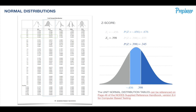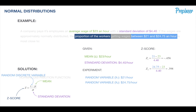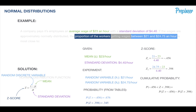We have our two values: 0.676 from the first z-score and 0.345 for the tail. Our banded cumulative probability between z-scores of negative 0.456 and 0.398 is 0.676 minus 0.345, which equals 0.331. So the proportion of workers getting wages between $21 and $24.75 is 33.1%.